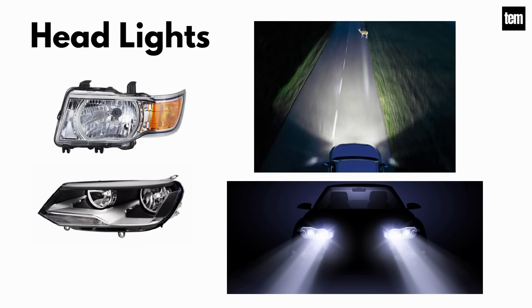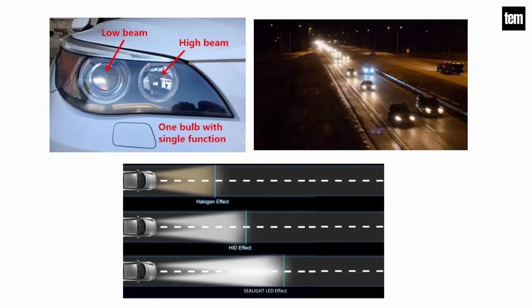Headlights. A headlight is a light attached to the front of a vehicle to illuminate the road ahead so the driver may drive safely. The two types of headlights are low beam and high beam, which allow drivers to see the road in the dark and also indicate to other drivers that a vehicle is present.